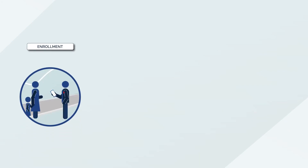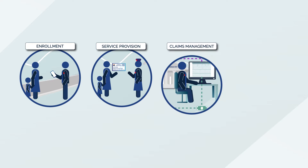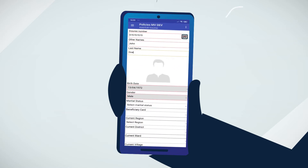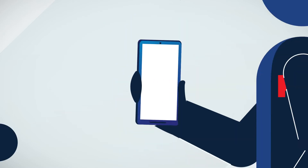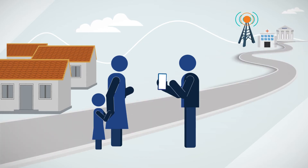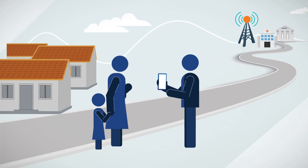OpenIMIS is used to support business processes in beneficiary enrolment, health service provision, claims management and data analysis and monitoring. Using OpenIMIS on mobile apps or its web interface, enrolment officers employed by a health financing scheme conduct community outreach to enrol beneficiaries like Marie and her family into a scheme without them having to travel long distances to the insurance office.